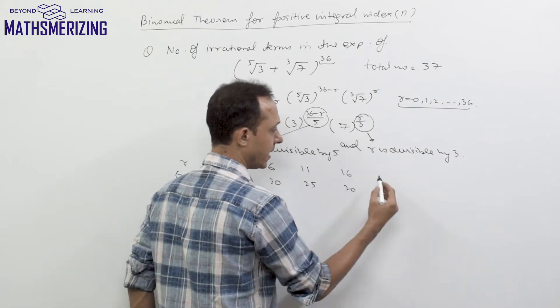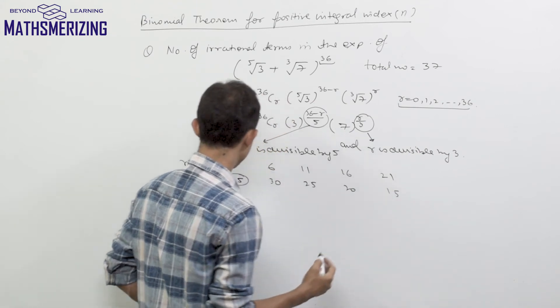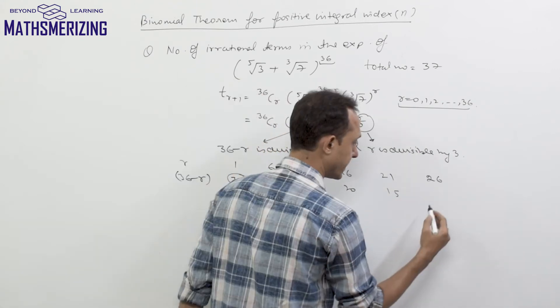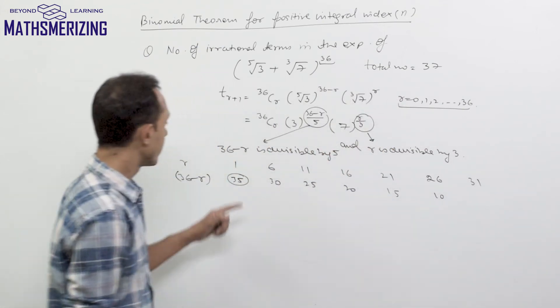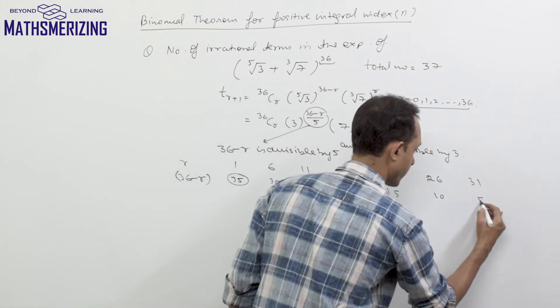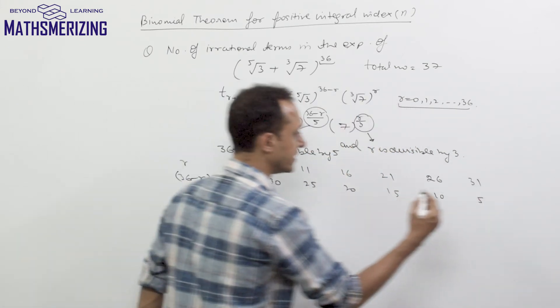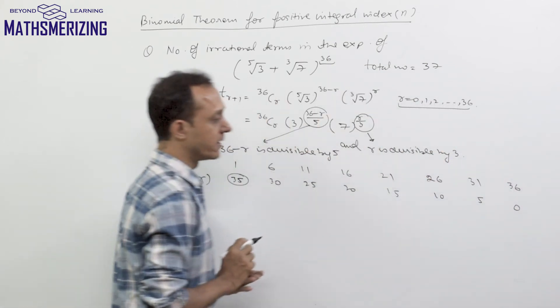If I put r as 21, I'll get this value as 15. 26 gives 10, and if I put r as 31, I'll get this value as 5. And then if I put r as 36, I'll get this value as 0.